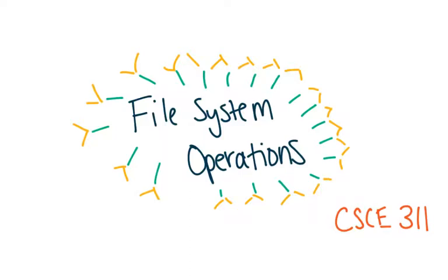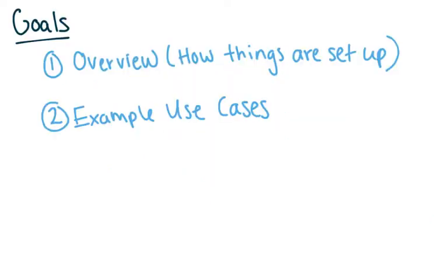In this video, I'm going to give you a few more examples of system file operations and give you a little bit more detail on what's happening with each one. First, I'm going to give you a little overview of how things are set up, some reminders, and tell you where things are — which things are in storage, which things are in memory. And then I'm going to give you a few example use cases for these operations that you can do on files.